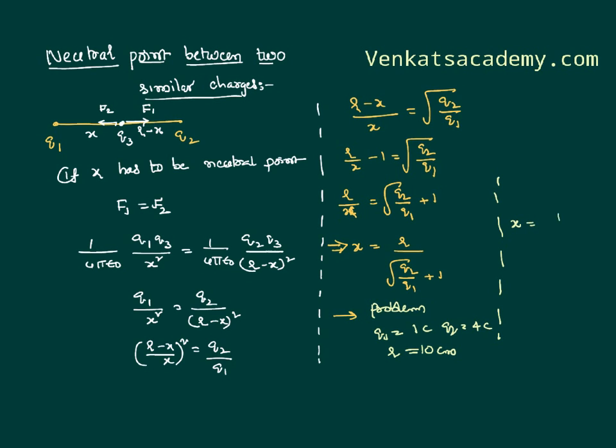I can use this formula, x equal to r is 10 centimeters, Q2 is 4, Q1 is 1 plus 1, that is 10 by root 4 is 2 plus 1, 10 by 3 that is 3.33 centimeter.